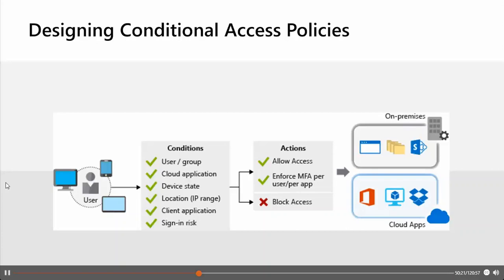There are not only cloud applications in the game — you can also bring the on-premises world in, for example via an Azure AD Application Proxy scenario with a Kerberos-enabled application on-premises. If you work with Cloud App Security (part of day two), you will see that we can work really well with on-premises applications and all connected cloud applications from a SaaS perspective. With this feature set you're in a great position to define exactly which user from which device with which condition has which access on which application in your on-premises infrastructure or cloud applications.